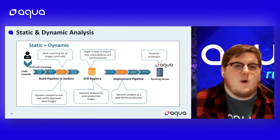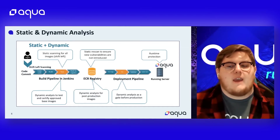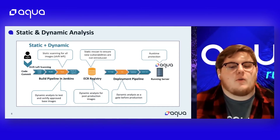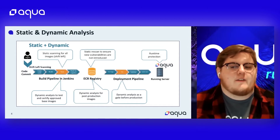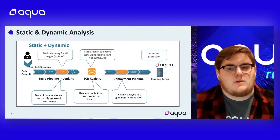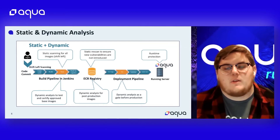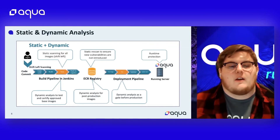There are a few reasons why we differentiate here. Dynamic scanning is a recognized term for probing and running an application to discover ways in which it can be attacked — and this is not what Aqua Dynamic Threat Analysis does. DTA runs the application image and observes its behavior. There's nothing in DTA that tries to simulate an attack or expose weakness.